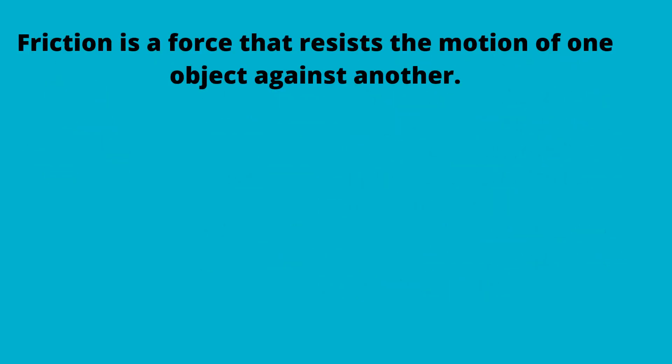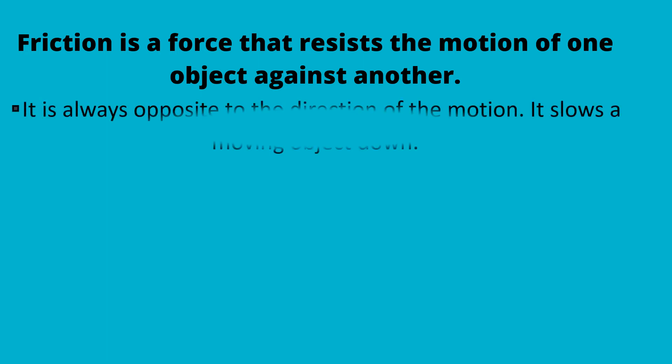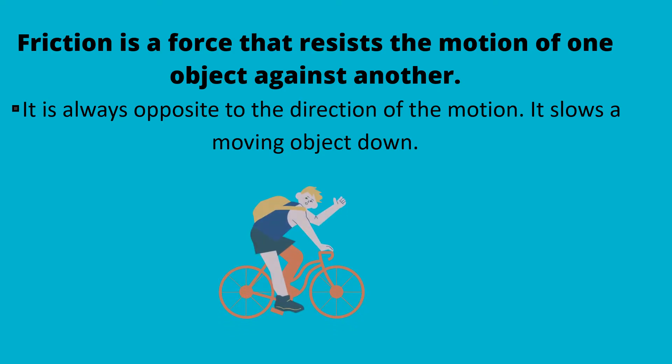What is friction? Friction is a force that resists the motion of one object against another. It is always opposite to the direction of the motion. It slows a moving object down.